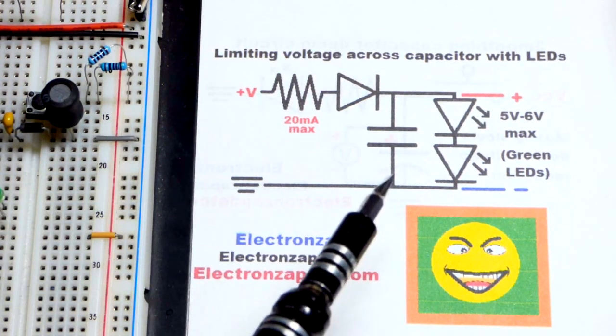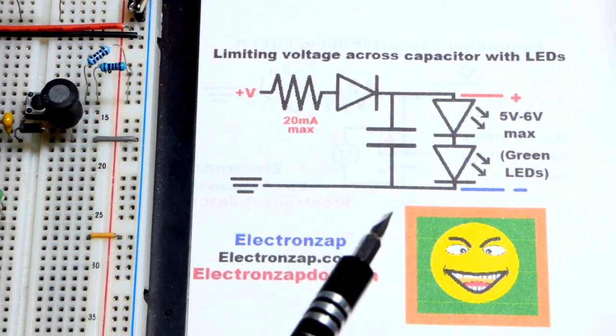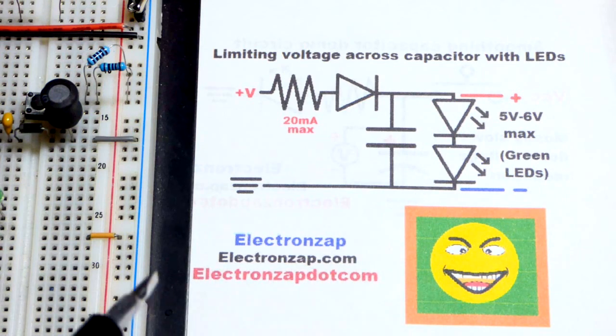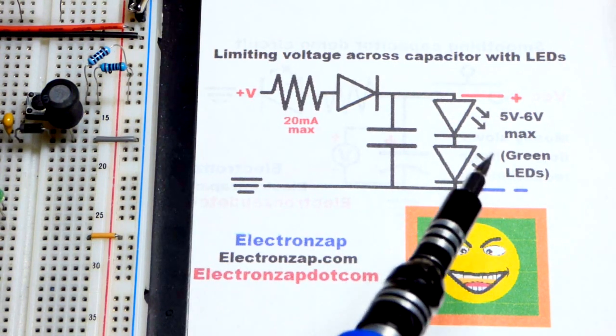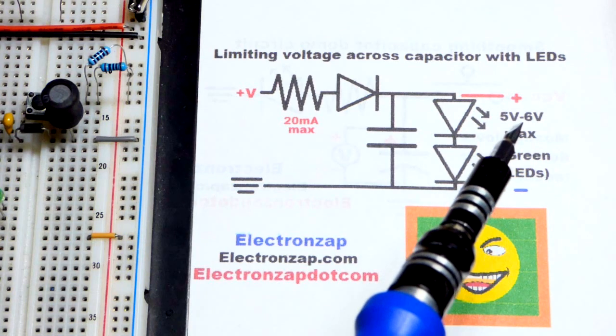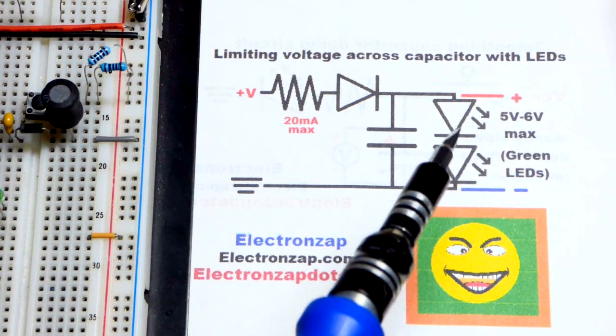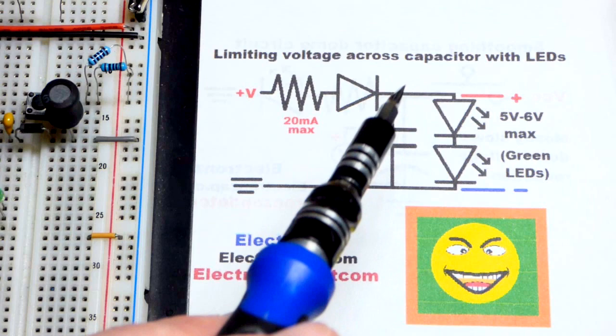In this video we're going to limit the voltage across a capacitor with a couple LEDs. If they're green or blue then they start conducting about 2.5 volts. So they're in series, so it's going to take about 5 volts before they start conducting.